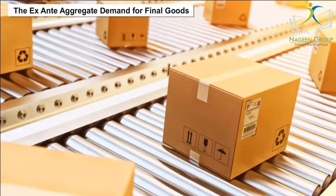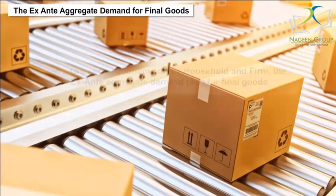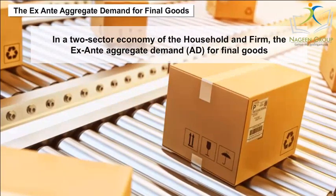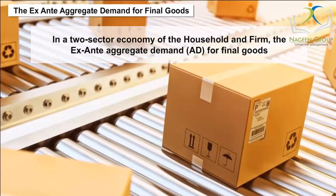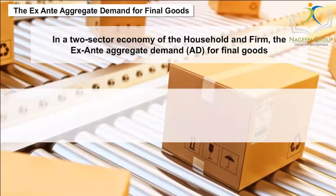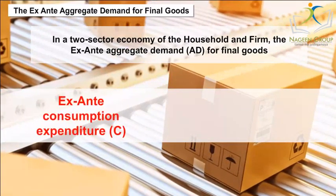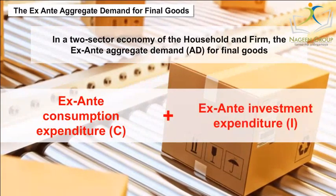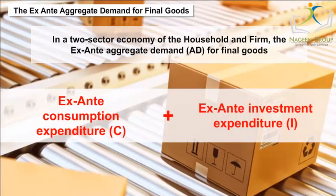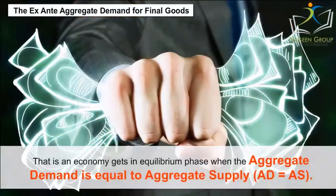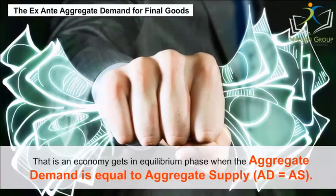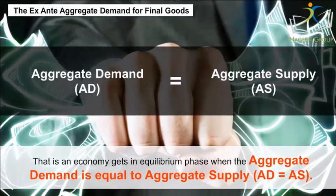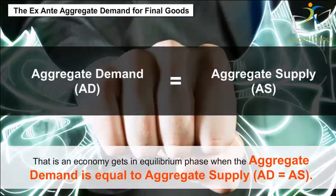The ex-ante aggregate demand for final goods: In a two-sector economy of the household and firm, the ex-ante aggregate demand (AD) for final goods is the sum total of ex-ante consumption expenditure (C) and ex-ante investment expenditure (I) on the final goods. An economy reaches equilibrium when the aggregate demand equals aggregate supply, i.e., AD = AS.